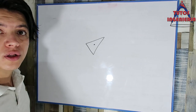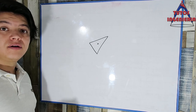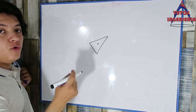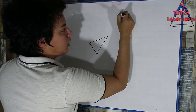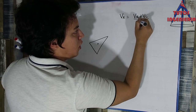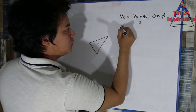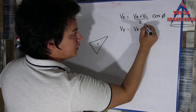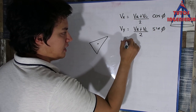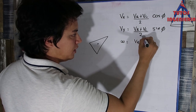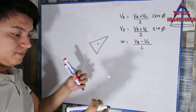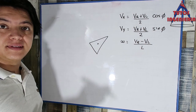In this video we are going to talk about the unicycle mobile model. In the last video, we saw equations that describe the movement of the car in space. Velocity in X is the sum of the right and left wheel velocities over 2, times cosine phi. Velocity in Y is the same equation but with sine phi. The angular velocity is the difference between the right and left wheel velocities over L, where L is the distance between the wheels.